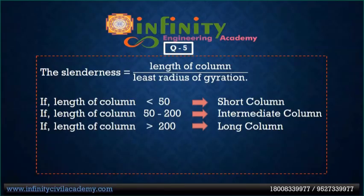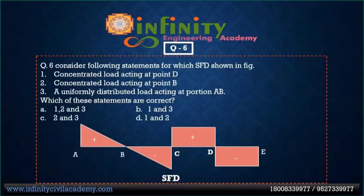Slenderness ratio is used to classify columns: if less than 50, the column is short; if between 50 and 200, the column is intermediate; if greater than 200, the column is long. Long columns generally fail by buckling, while short columns fail by crushing.